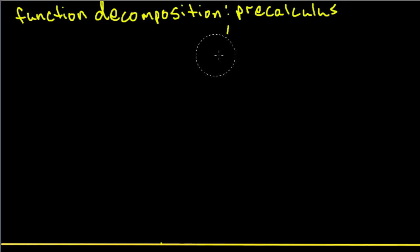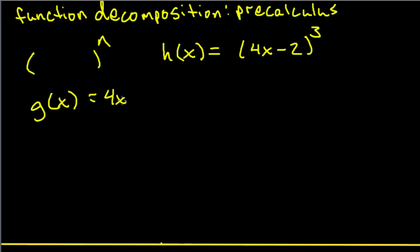Now for the third and final hint, or just an easy way to think about these, is when we have something in parentheses to a power. So let's say we have this h(x) equal to 4x minus 2 to the third. Well, g(x) is just going to be what's in parentheses here. So 4x minus 2. And just like in all the others, if we place our finger over g(x) and put an x there, then we get x to the third. And we have decomposed this h(x) function.